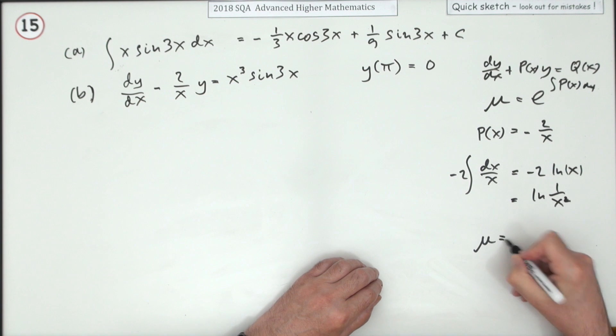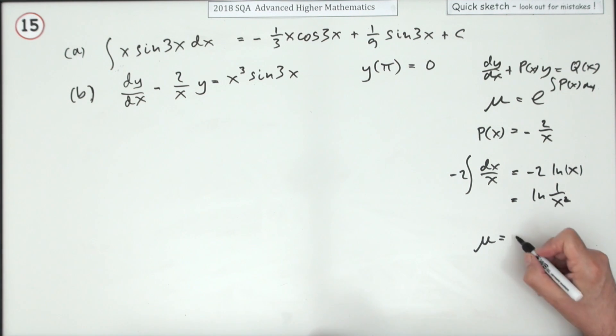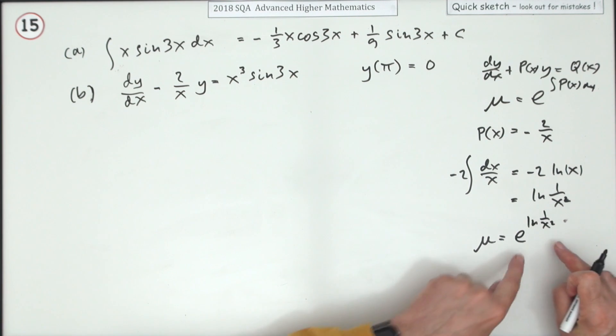Which is e to the power of that. If there was a plus c, that would separate into e to this times e to just a constant - that's just a number. When you multiply, it's all going to cancel out. That's the first part: find the integrating factor.